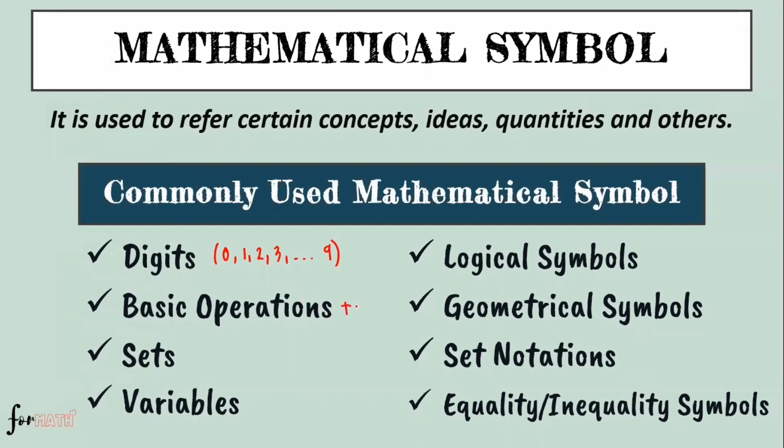Basic operations: plus, minus, divide, and then times. And then sets, set symbols, can be union, intersection, subset. And then variables. Variables are any letters that we can find in the alphabet, so from A to Z we can use as a variable. So commonly used we have x, y, and z, normally used in small letters.